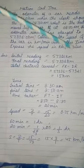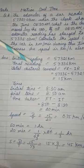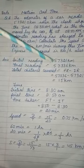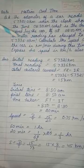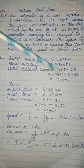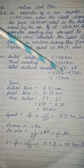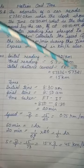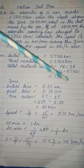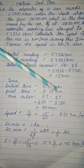Express the speed in kilometers per hour also. The initial odometer reading is 57321 km and the final reading is 57336 km. The total distance covered equals final reading minus initial reading, that is 57336 minus 57321, so the distance covered is 15 kilometers.